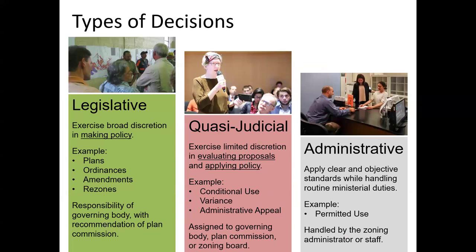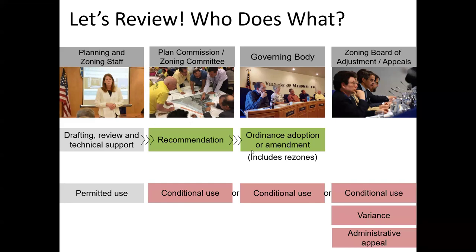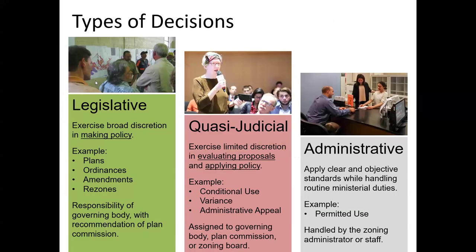There are actually two different major types of decisions that plan commissions oftentimes make, and you dance back and forth between these functions. One function is legislative — this is where you're creating plans, creating ordinances, or amending them. This is a legislative function and you have a whole lot of broad discretion. This is the responsibility of the governing body, but they're doing this with the recommendation of the plan commission. When you're working on updating these tools, you're functioning in a legislative capacity.